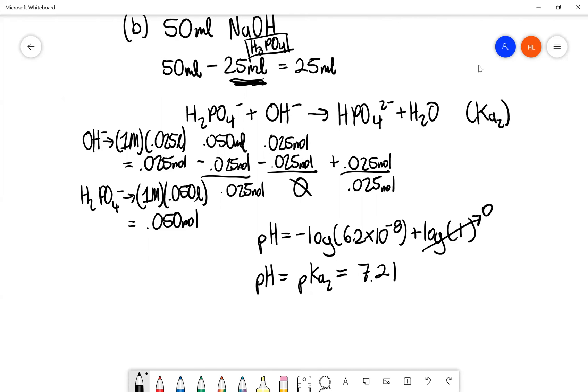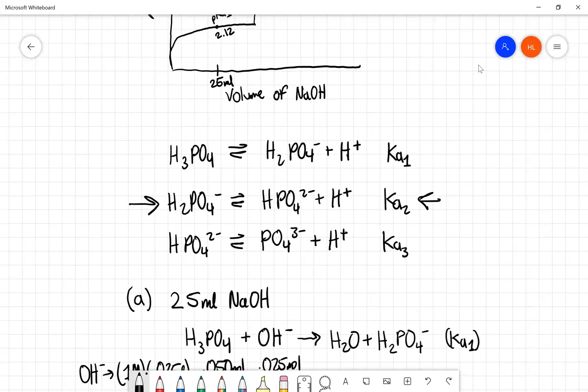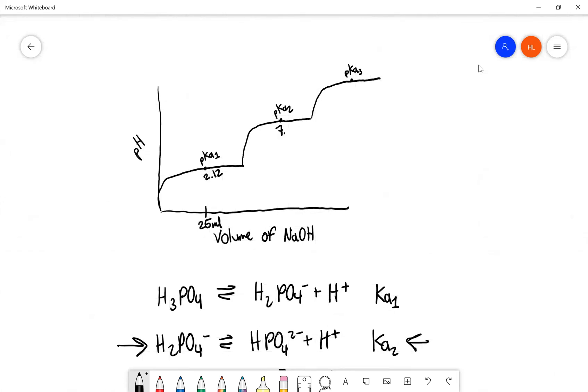So we can put this on our graph as well under our pKa 2. So that's 7.21. And then our x value is going to be 50 milliliters. So I think we all know where this is headed at this point. Trying to find the milliliters of pKa of 3, or we could just find pKa of 3 at this point.